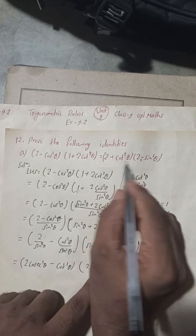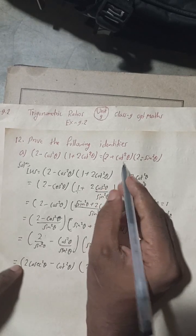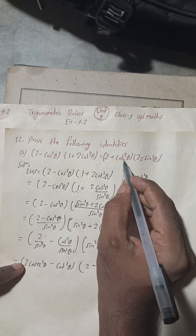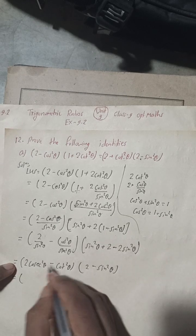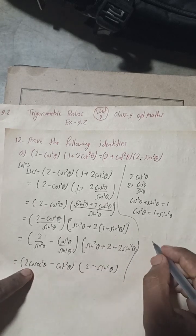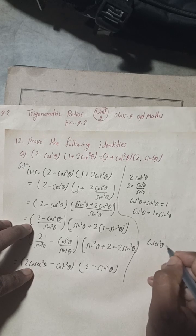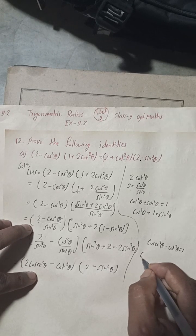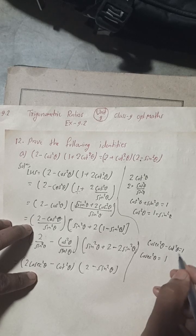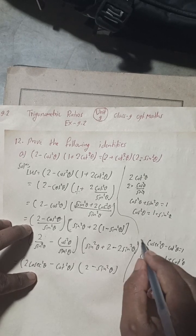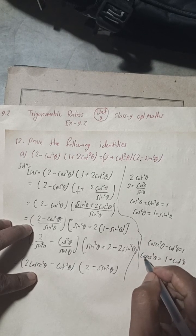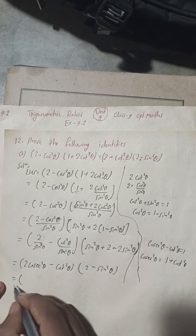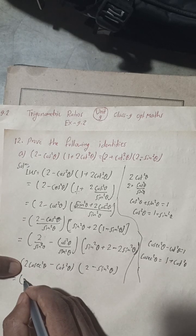We have obtained (2 - sin²θ) for one part. Now we need to get the other factor. We will change cosec²θ into cot²θ using the identity: cosec²θ - cot²θ = 1, therefore cosec²θ = 1 + cot²θ. This is our formula.